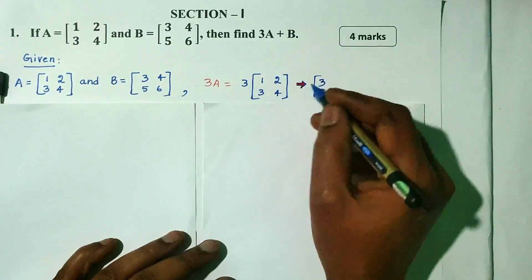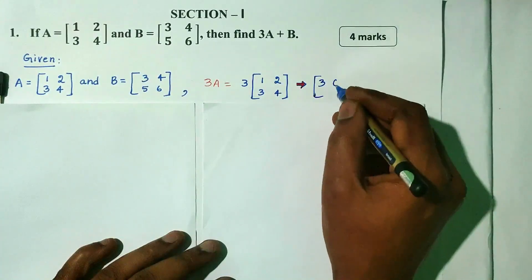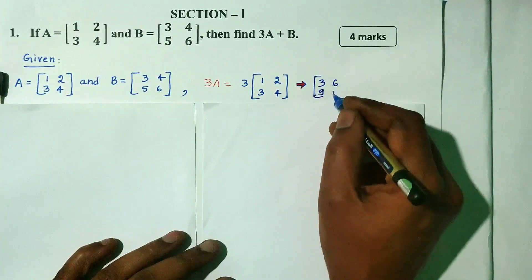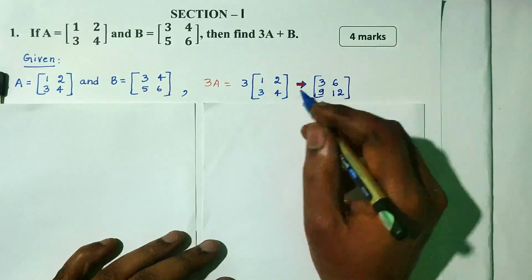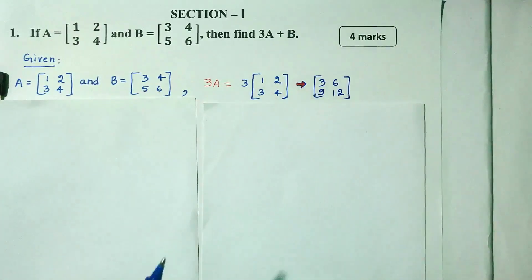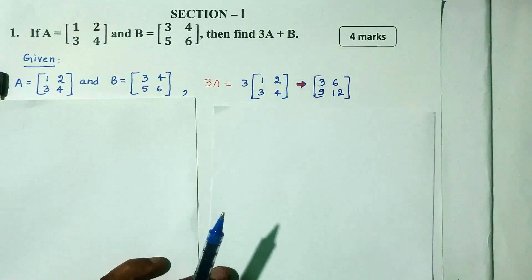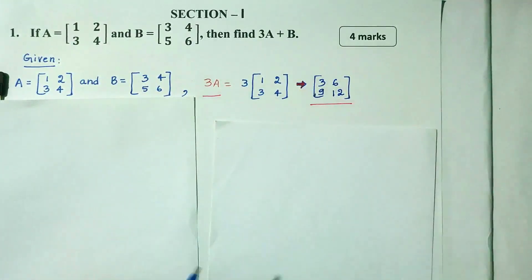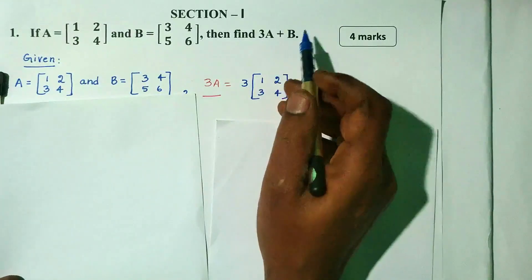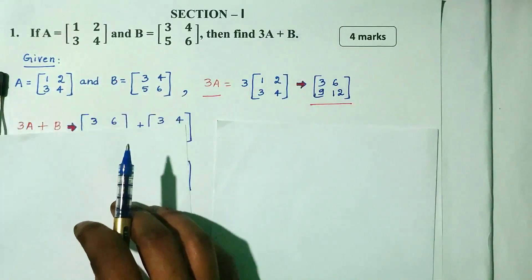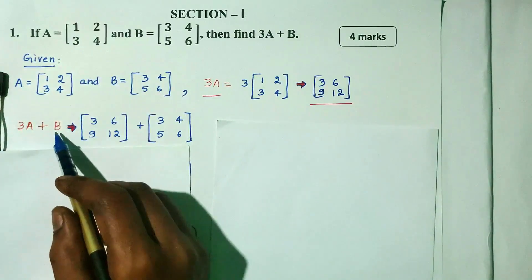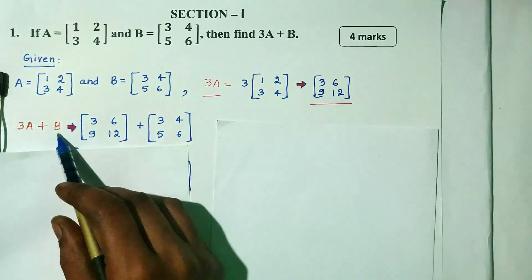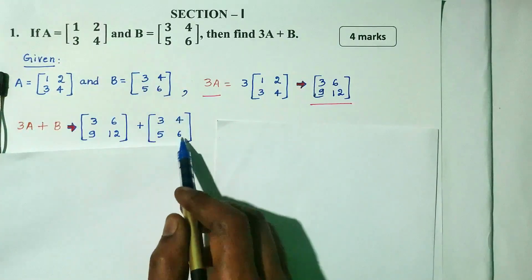So 3a: 3 into 1 is 3, 3 into 2 is 6, 3 into 3 is 9, 3 into 4 is 12. So 3a equals [3, 6, 9, 12]. The question is 3a plus b. 3a is [3, 6, 9, 12], plus b is [3, 4, 5, 6].